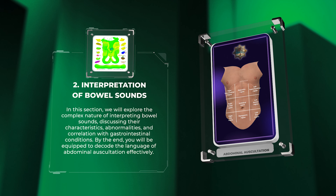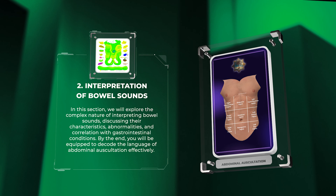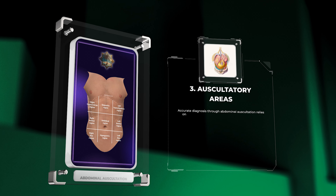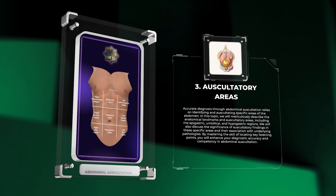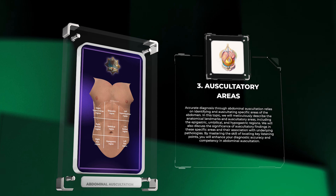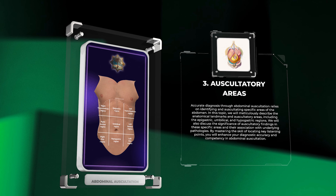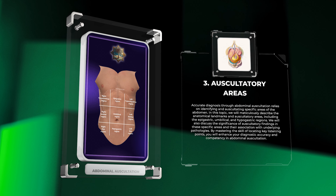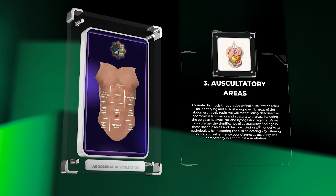By the end, you will be equipped to decode the language of abdominal auscultation effectively. Accurate diagnosis through abdominal auscultation relies on identifying and auscultating specific areas of the abdomen. We will meticulously describe the anatomical landmarks and auscultatory areas, including the epigastric, umbilical, and hypogastric regions.